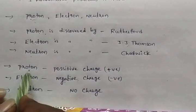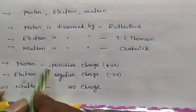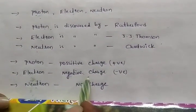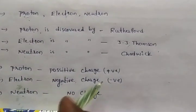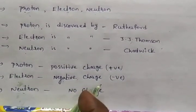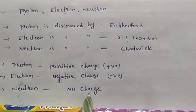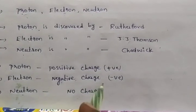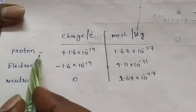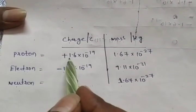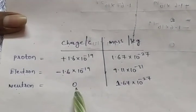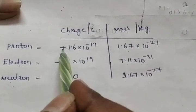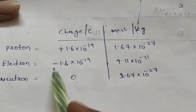Proton has a positive charge and electron has a negative charge. Neutron has zero charge — there is no charge on the neutron. The charge unit is Coulombs: proton is plus 1.6 into 10 to the power of minus 19, and electron is minus 1.6 into 10 to the power of minus 19.